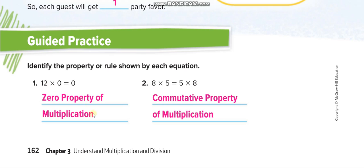Now you have to write the name of the property used in each statement. For a multiplication statement with zero, that's the zero property of multiplication. When the numbers are switched, that's the commutative property of multiplication.